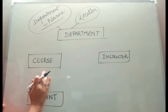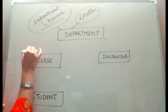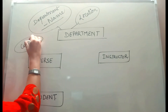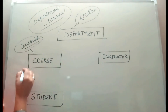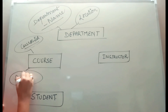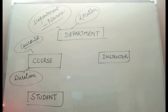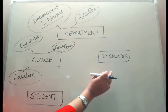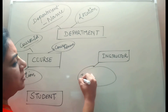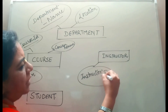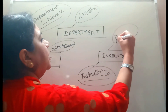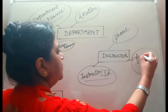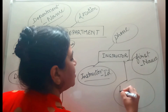Now for the course entity: the first attribute is course ID, which is the primary key — underlined. Then course duration and course name. For the instructor entity, the first attribute is instructor ID, which is the primary key — underlined. Then instructor phone number, instructor first name, and instructor last name.